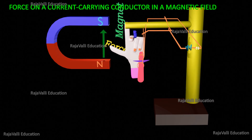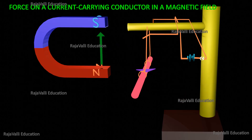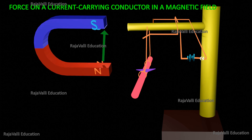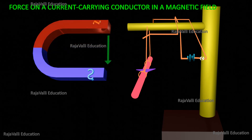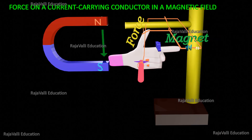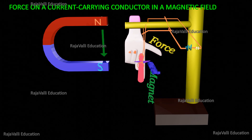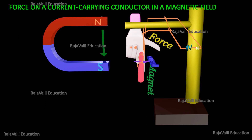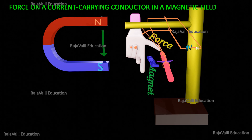Now we are changing the direction of the magnetic field, so that the south pole exists below the rod and the north pole exists above the rod. Using the known directions of the current and the magnetic field, we find out the direction of deflection of the aluminum rod, which is now opposite to the previous case.